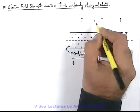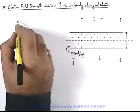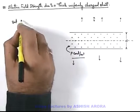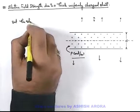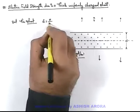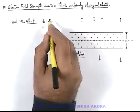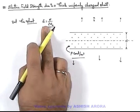And we know well that in the outside region, at any point the electric field is given by - we can write outside the sheet, electric field is given by σ by 2ε₀, where σ is the charge per unit surface area of the sheet.